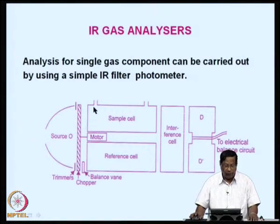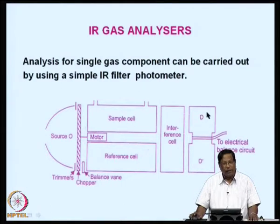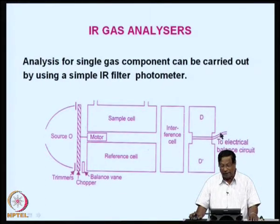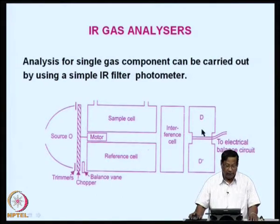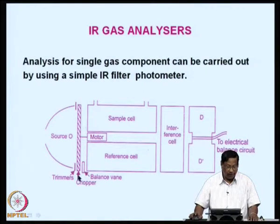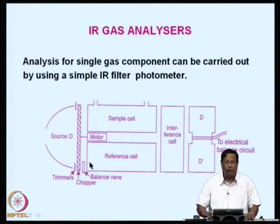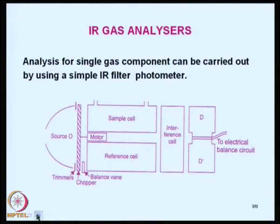When the sample cell contains the analyte, only the analyte will be absorbing the radiation, and the diaphragm will be pushed down, which is balanced electrically to give a reading of the electrical signal. This signal is then correlated to the concentration of the analyte gas. This is one arrangement.